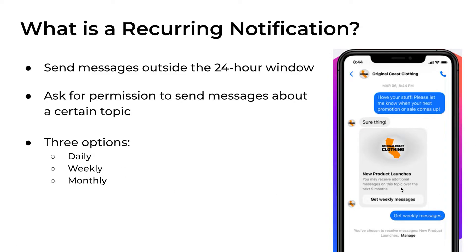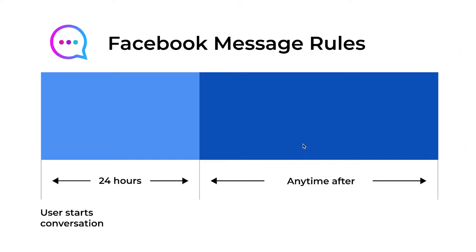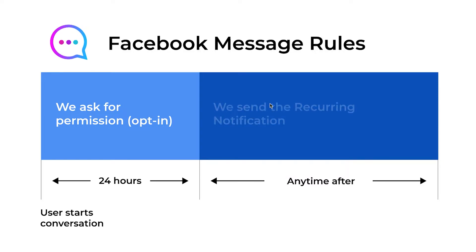Here on the right side I have an example of a simple notification request for a new product launch. When the user clicks on 'Get weekly messages,' you can send them a notification about a new product launch every single week. Inside the 24-hour window we need to ask for permission — an opt-in. Once the user clicks on 'Get daily' or 'Get weekly messages,' we can send them a recurring notification outside the 24-hour window.